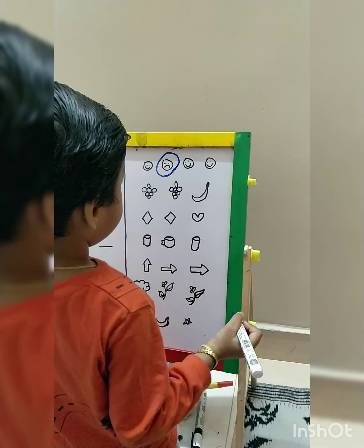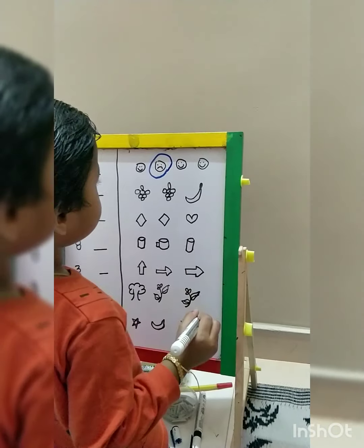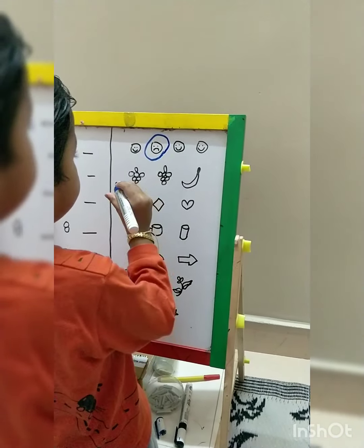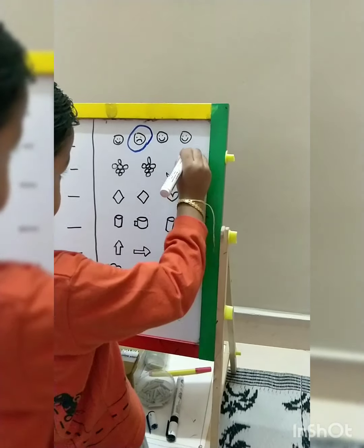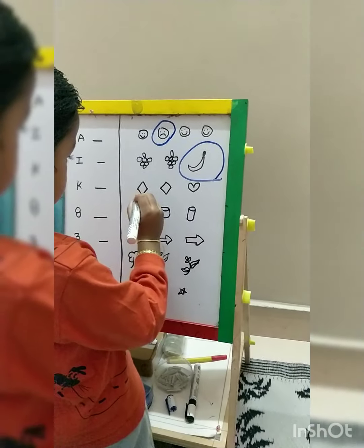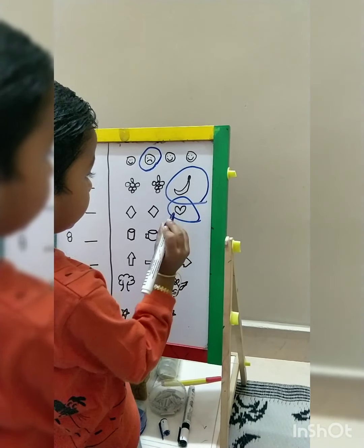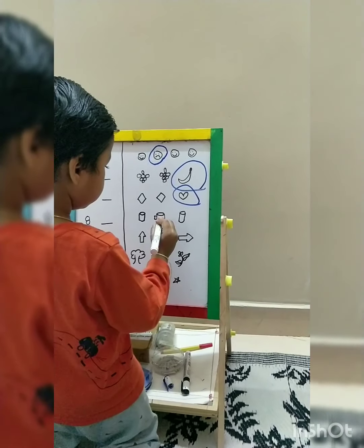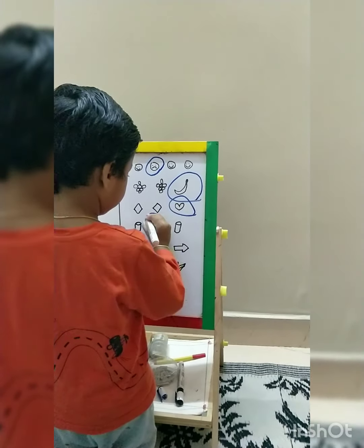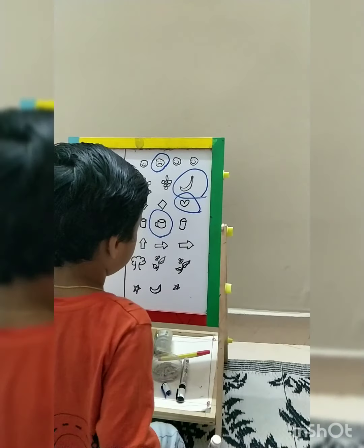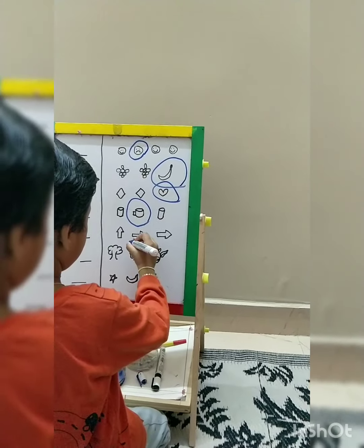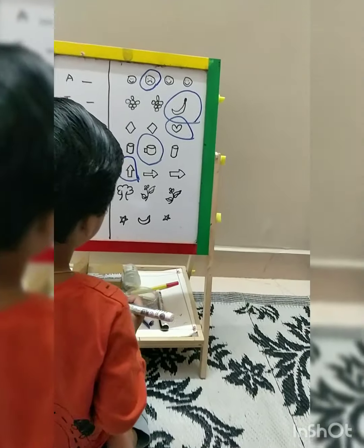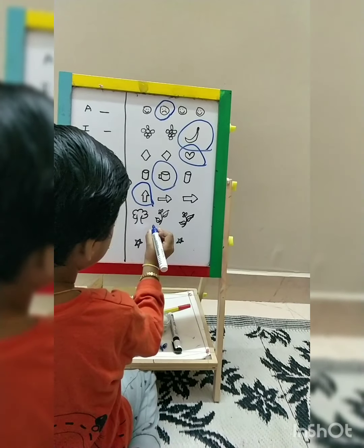Why is it different? It is sad — all other smileys are happy smileys. Next: grapes, grapes, banana — which one is different? Banana is different. Next: glass, cup, glass — which one is different? Cup is different. Upward arrow, right arrow, right arrow — up arrow is different. Tree, plant, plant —